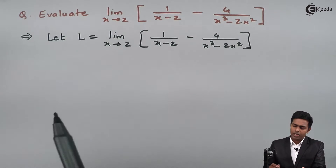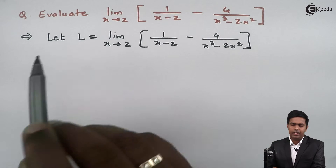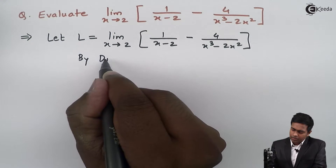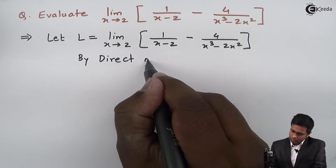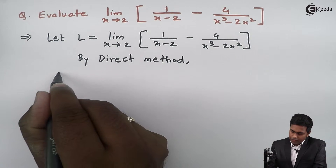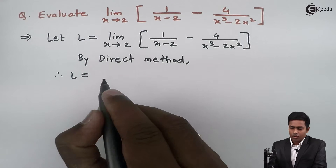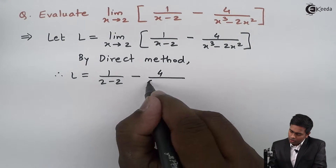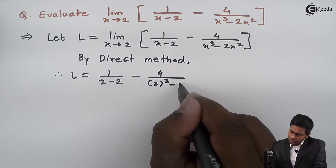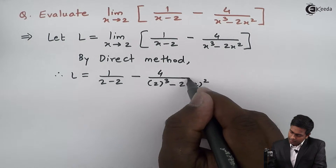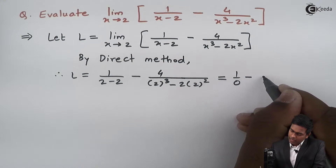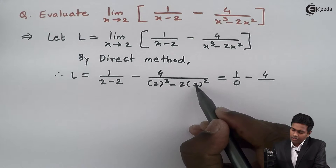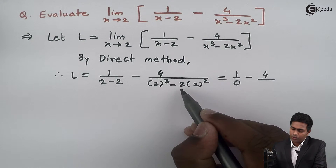I am assuming this given limit as L. By direct method we will get L as 1 upon (2 minus 2) minus 4 upon (2 cubed minus 2 into 2 squared). So it is 1 upon 0 minus 4 upon — 2 cubed is 8, 2 squared is 4, and 4 into 2 is 8.